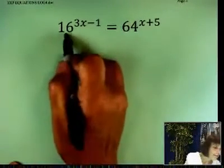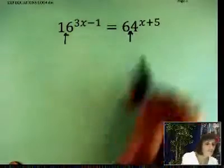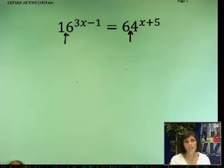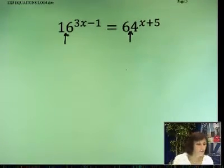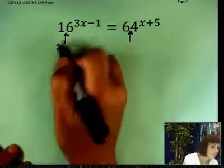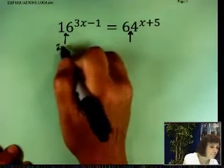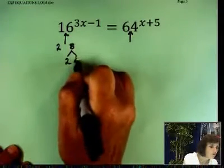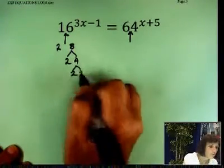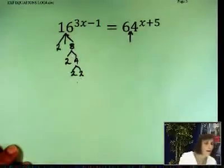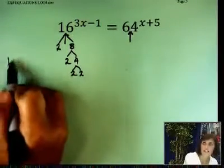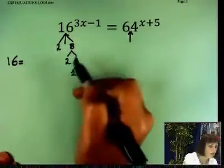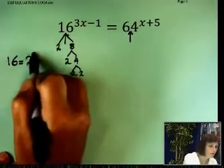You try to find a common base for these two bases. One way, if you don't see it right away, do prime factorization. Okay, 16 divided by 2 is 8. 8 divided by 2, 4, 2. Alright, so 16 is simply 2 to the fourth power.